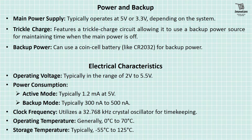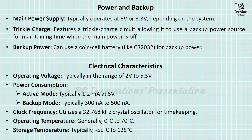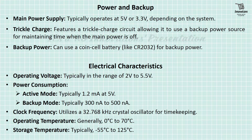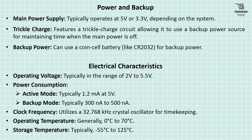Regarding power and backup: the main power supply typically operates at 5V or 3.3V depending on the system. The trickle charge feature allows use of a backup power source for maintaining time when main power is off. This module uses a coin cell battery like CR2032 for backup power. Electrical characteristics: operating voltage typically 2V to 5.5V; power consumption in active mode is typically 1.2mA at 5V; and in backup mode typically 300nA to 500nA, which is very low.